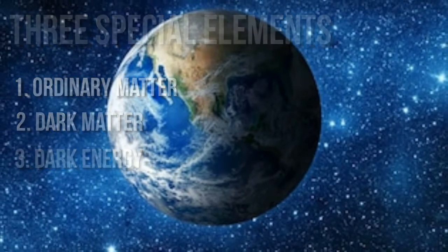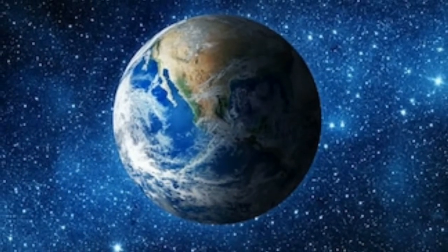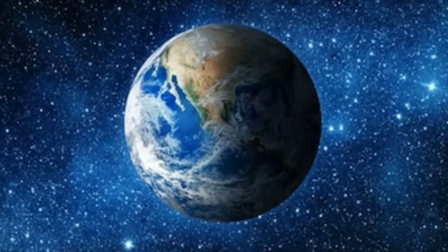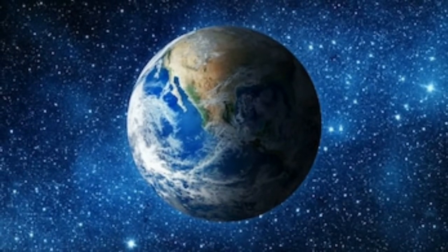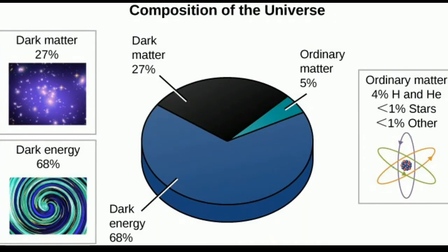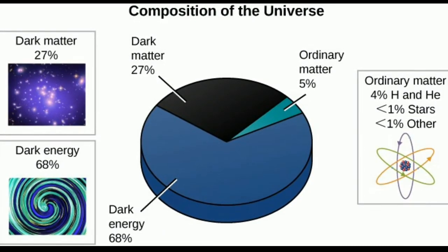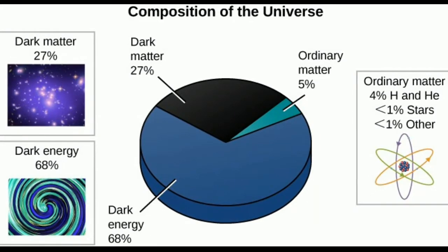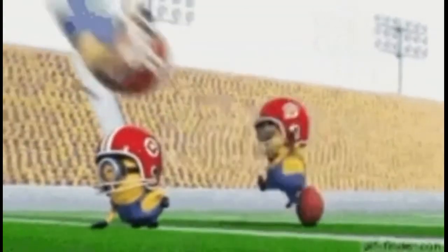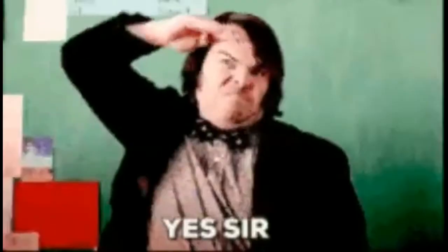Before getting into all this, we should first get to know the percentage of all these elements present in our universe. According to this graph that I am showing you, we have 4.6% of ordinary matter present in the universe, 23.3% of dark matter present in the universe, and 72.1% dark energy present in the universe, thus making dark energy the biggest of them all.